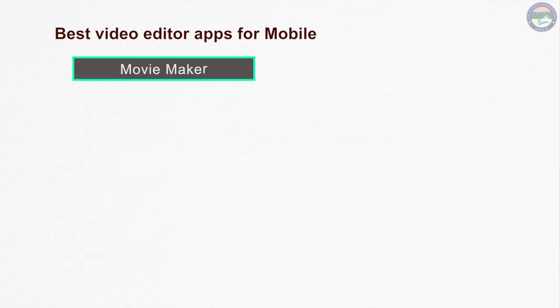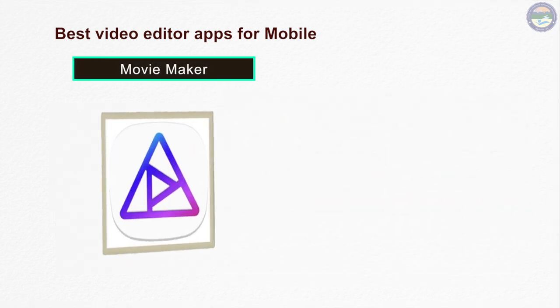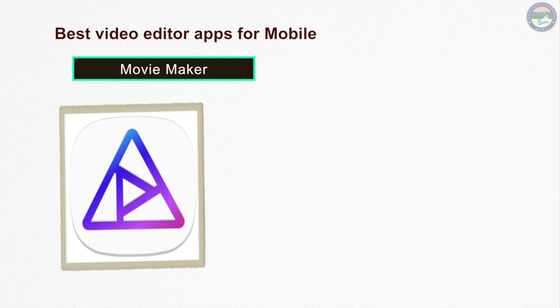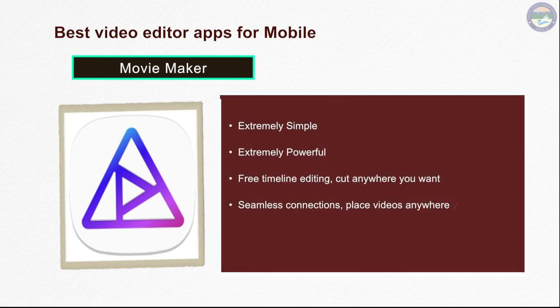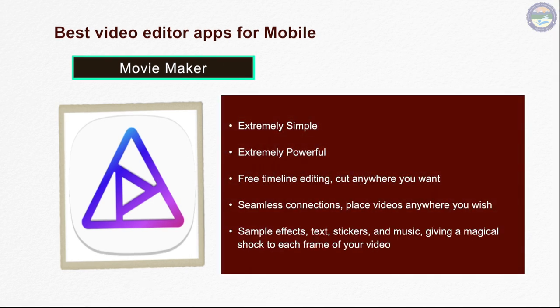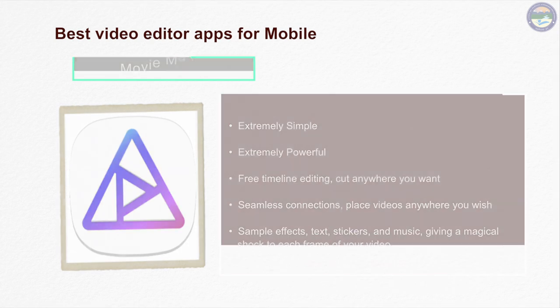Movie Maker Filmmaker is a popular Android video editing app. With this app you can trim, crop and reorder your clips. You can also use video effects, custom filters, and edit your video.